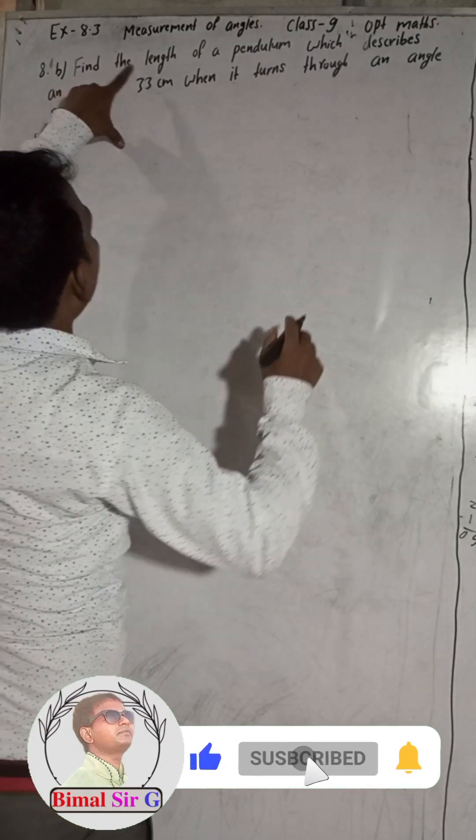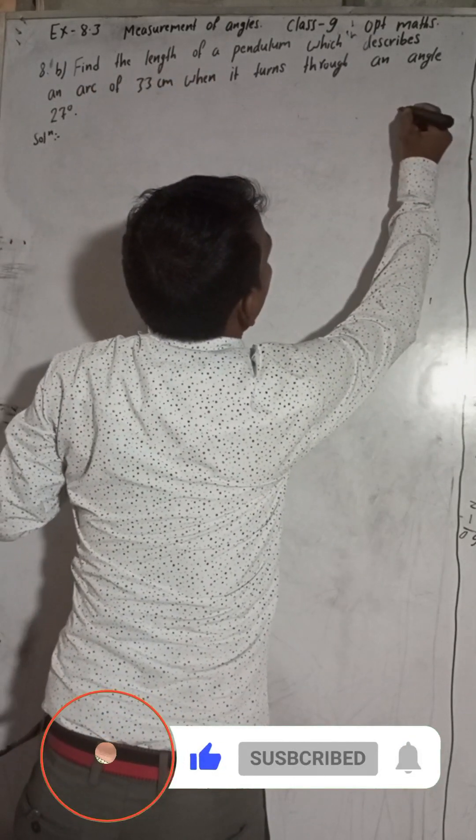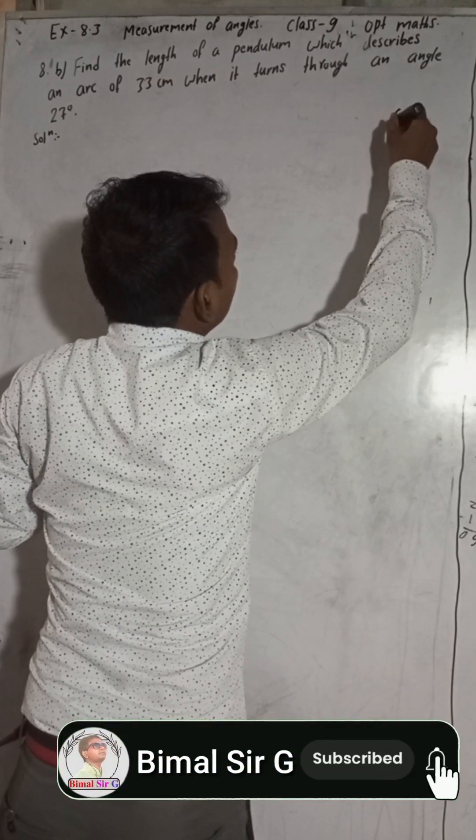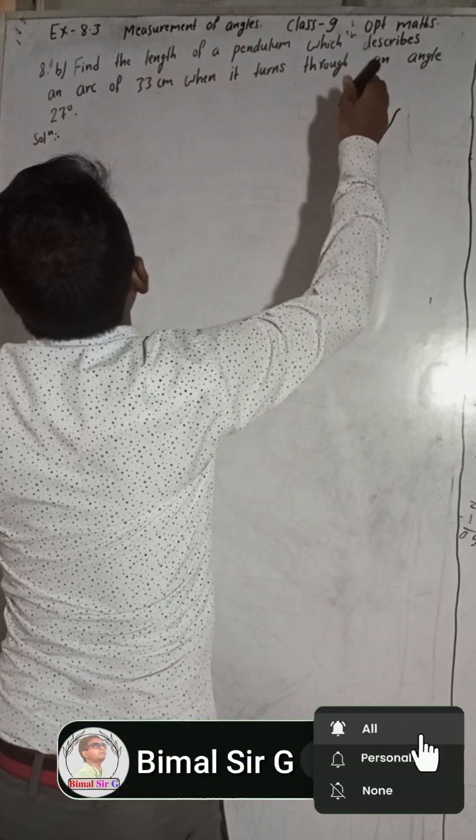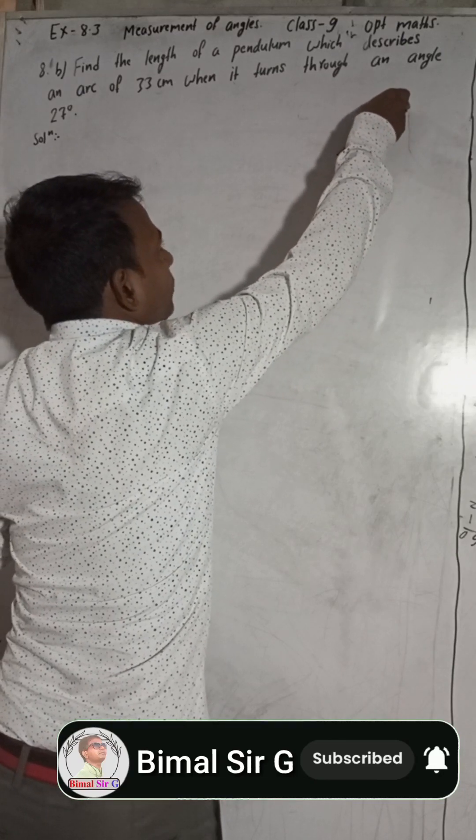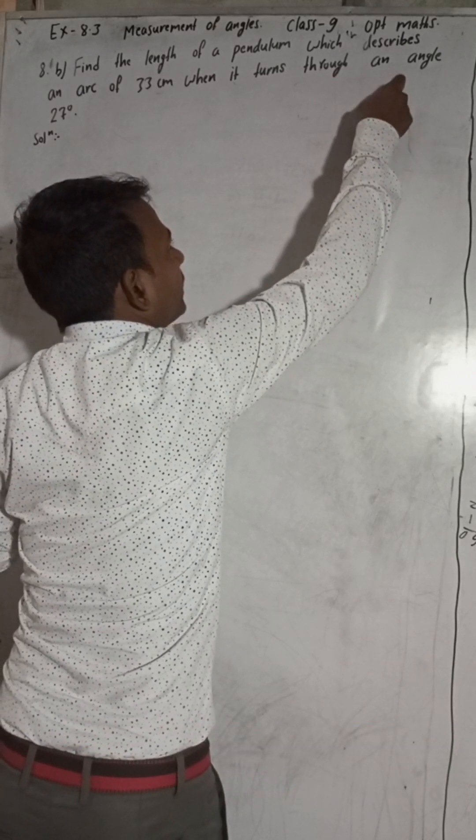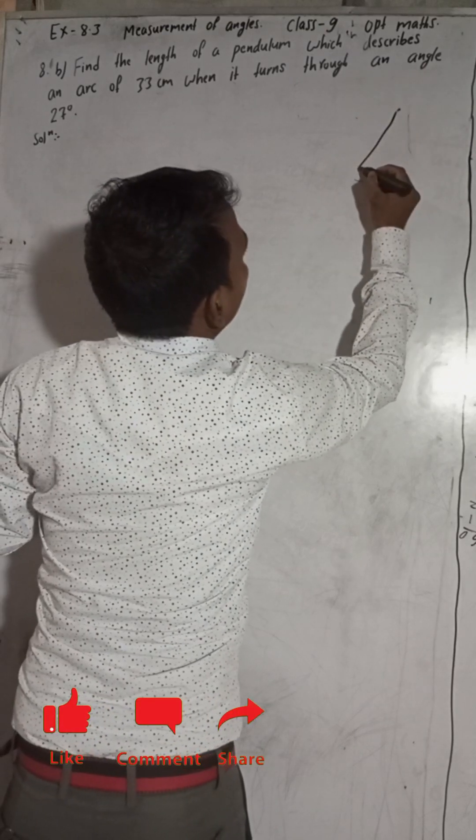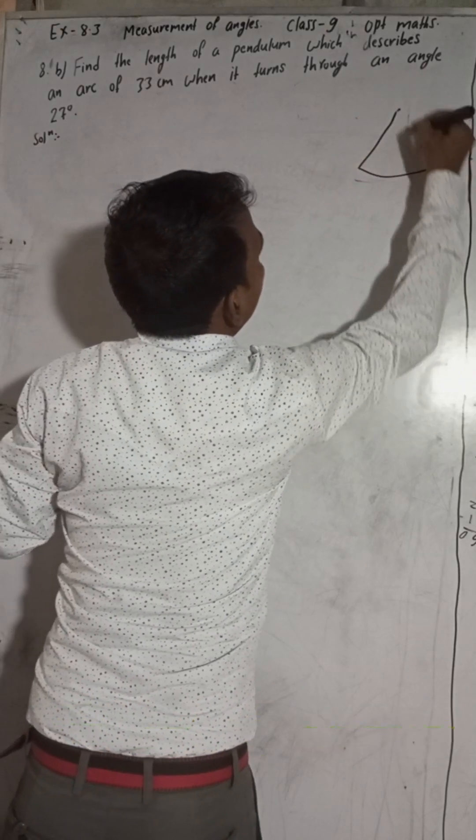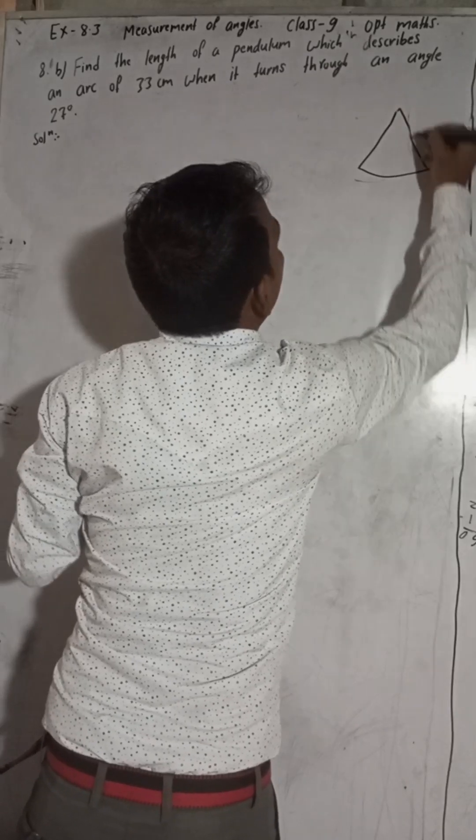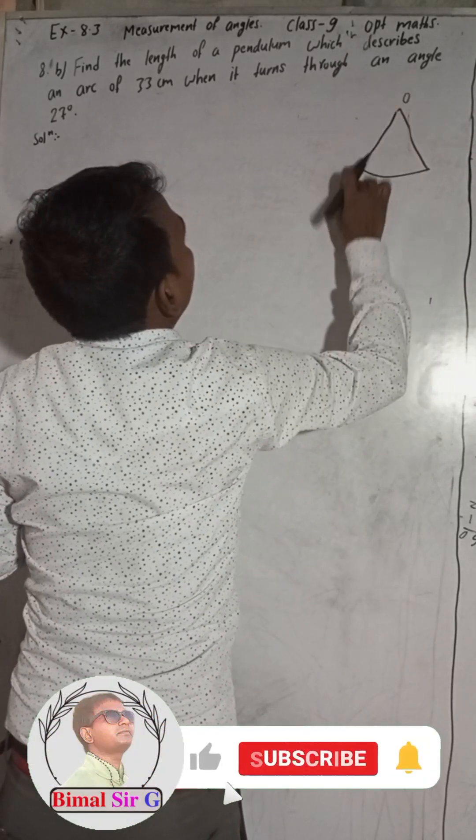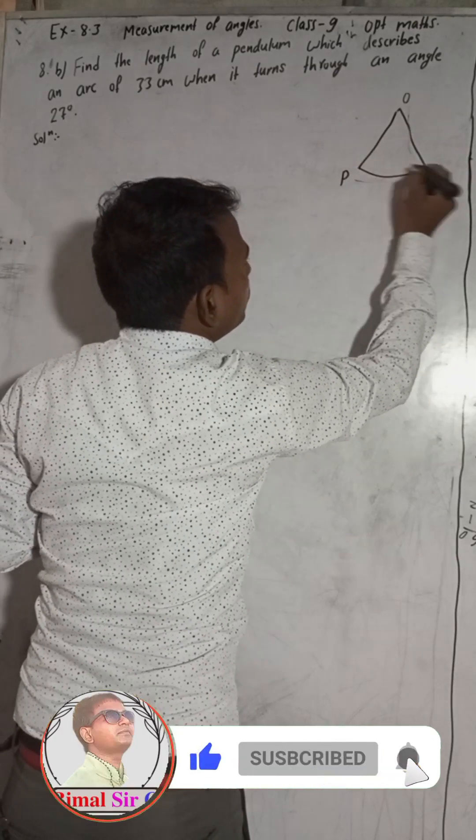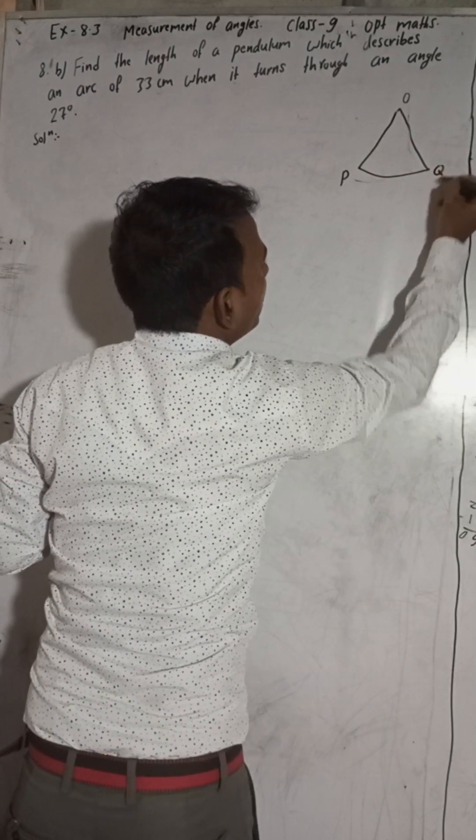According to the question, find the length of the pendulum. Pendulum means suppose this is the pendulum from O which describes an arc. When it swings, this will make an arc. Here this is O, and OP is the length of this pendulum. When it swings it goes to the other side, this will be Q.